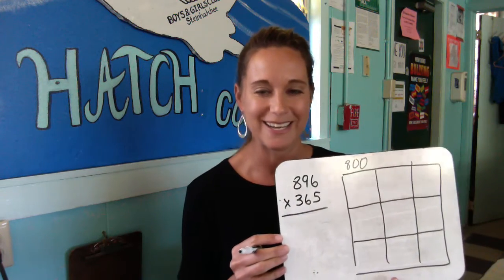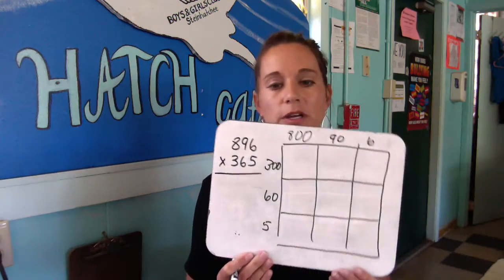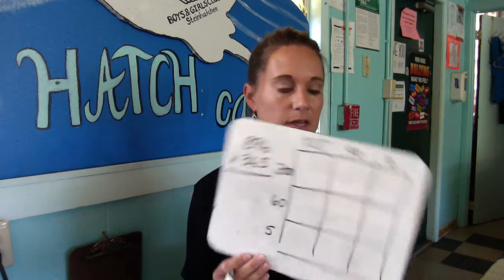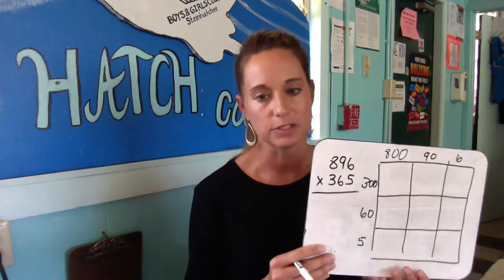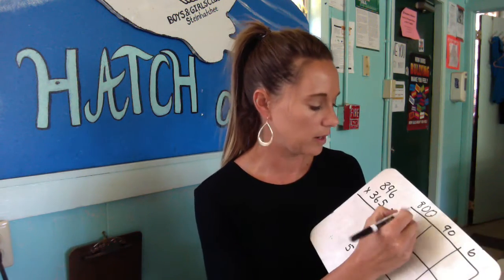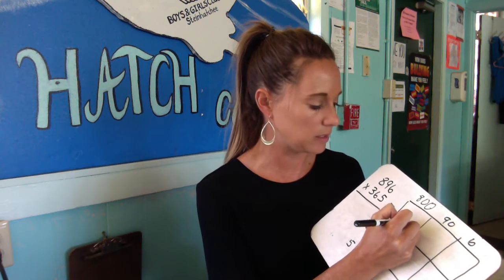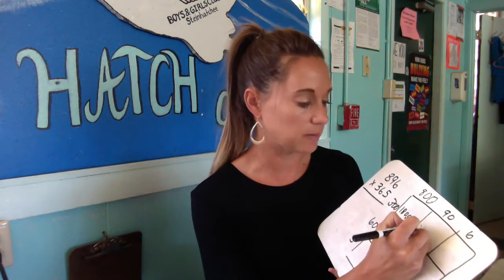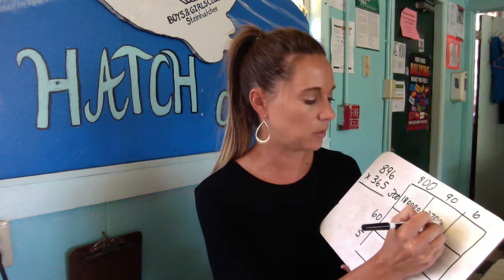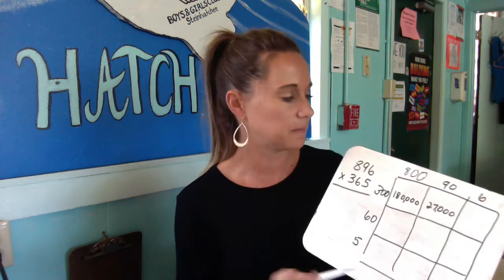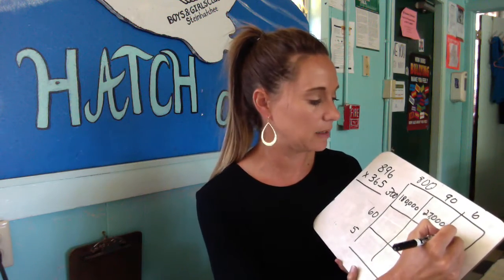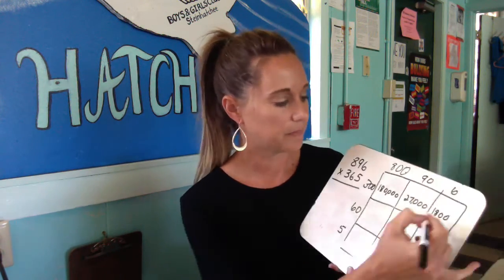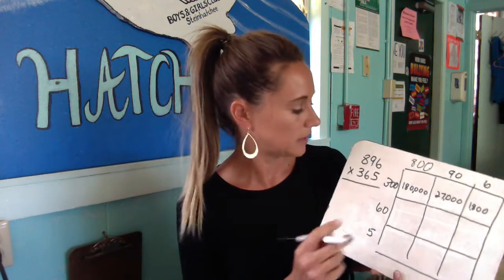Sorry for the sloppy handwriting — you would break apart the numbers into 800, 90, and 6, and then 300, 60, and 5. That's what your boxes would look like. So 800 times 300: 8 times 3 is 18, and then I have four zeros, so that gives us 180,000. Then 90 times 300: 9 times 3 is 27, and with three zeros that's 27,000. Then 6 times 300: 6 times 3 is 18, and then two zeros makes 1,800.